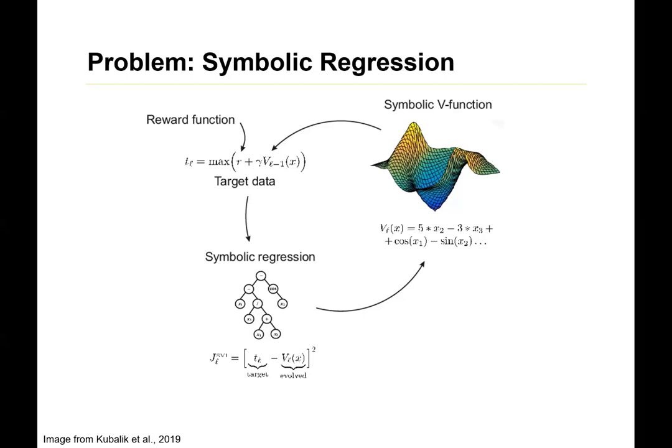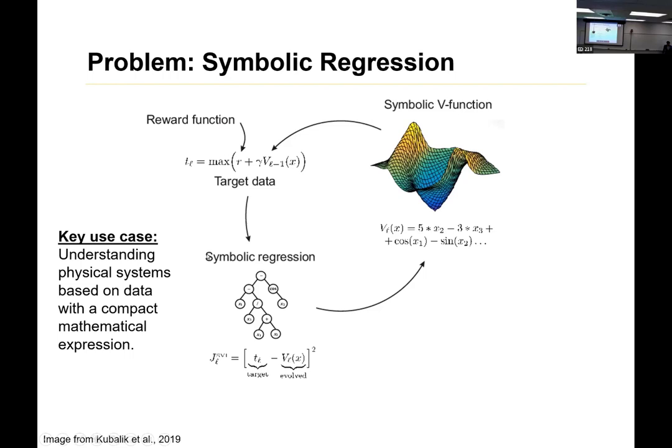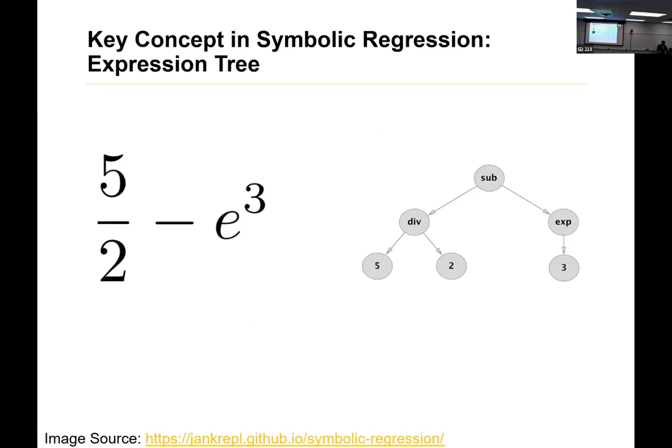So we use the reward function to compare that to the historical data. We use that loss information to recompute a new function using this, what's called an expression tree, which looks a lot like the syntax tree from LNNs. And then we iterate on that until we reach convergence. So the bottom line is what the goal of this is, is to understand some complex physical system with a very compact mathematical equation. So the key concept is this idea of an expression tree. So here is a mathematical equation and here's the associated expression tree.